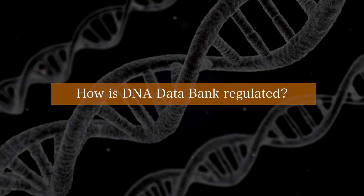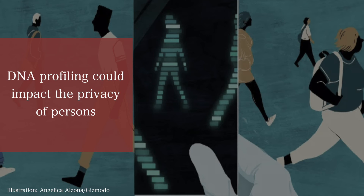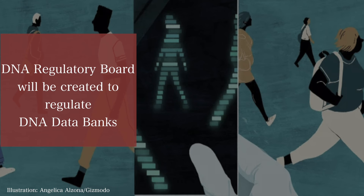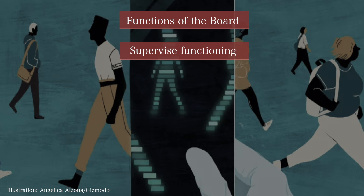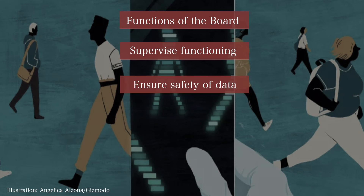How is the database regulated? DNA profiling could result in personal information being disclosed, which could impact the privacy of persons. In order to regulate these DNA data banks, the bill creates a DNA regulatory board. The functions of the board include, among others, to supervise the functioning of DNA laboratories and data banks, and ensuring that information relating to DNA profiles and samples are kept secure.